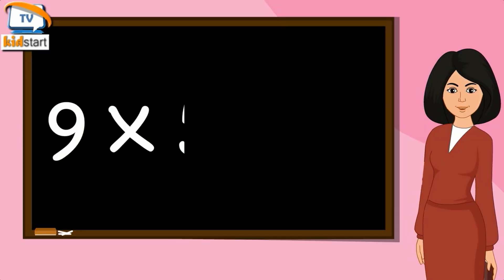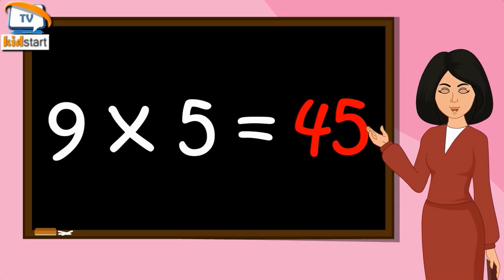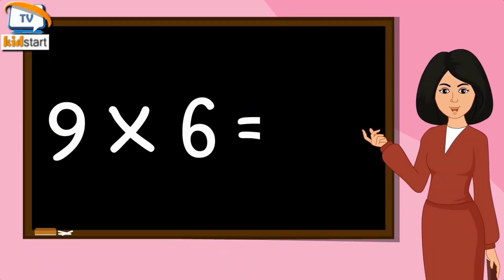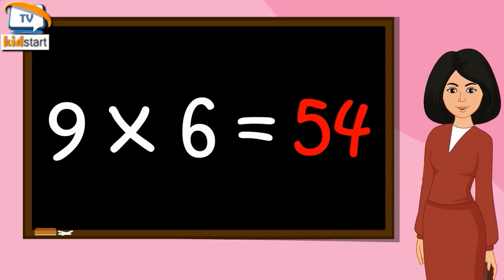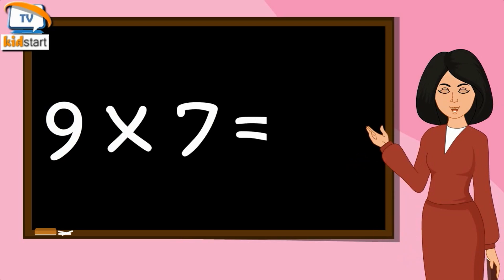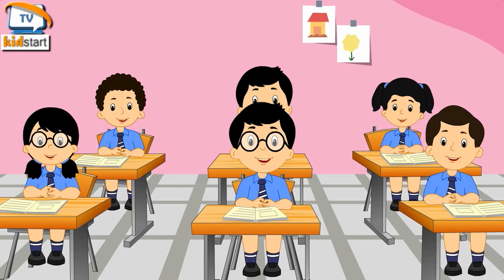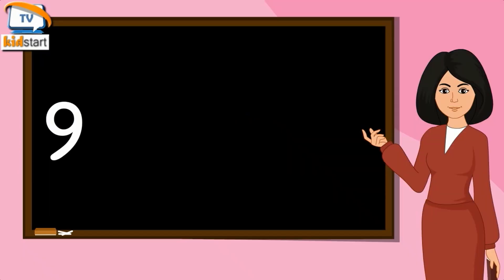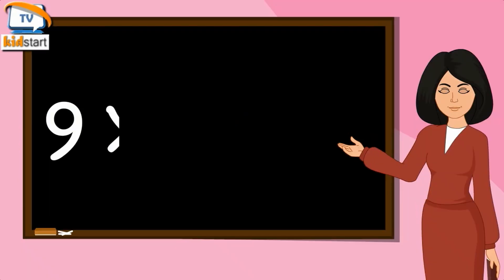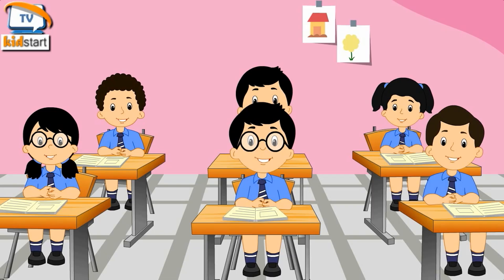9 fours are 36, 9 fives are 45, 9 sixes are 54, 9 sevens are 63, 9 eights are 72.